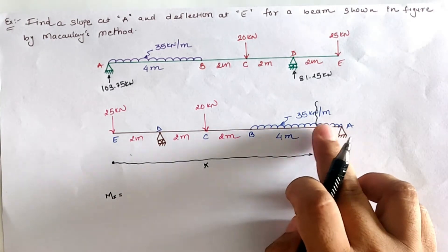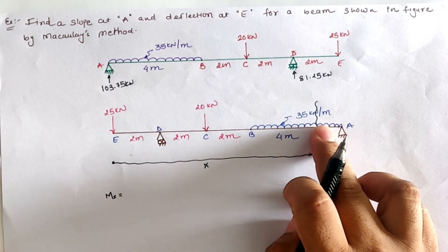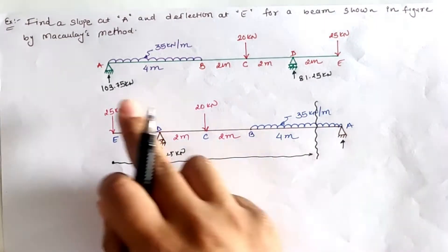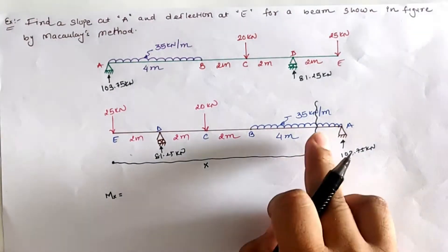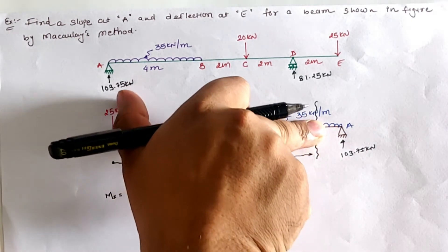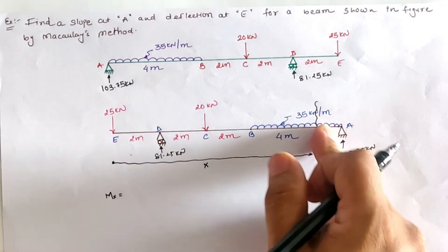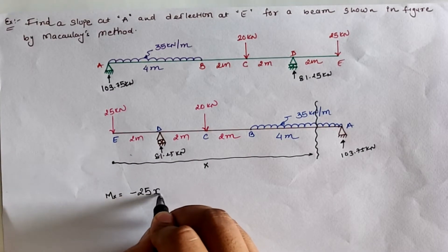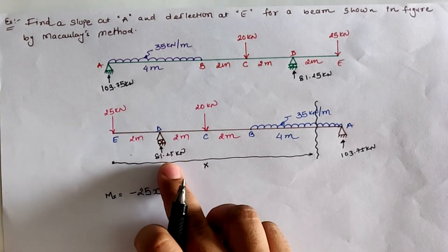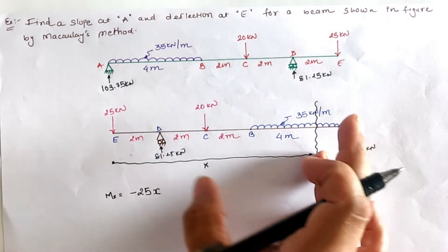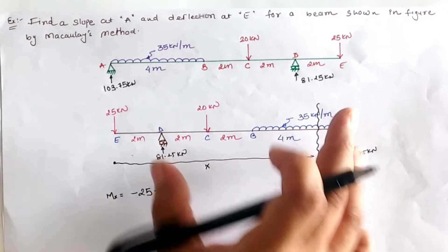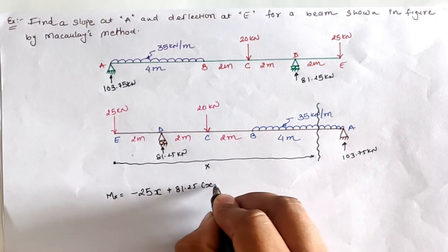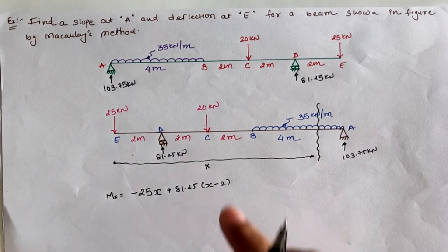If we calculate the moment at section Mx: due to the 25 kN load, it acts in the anticlockwise direction. Since the section is on the left-hand side, anticlockwise is negative, so it is −25x. Due to the 81.25 reaction, it creates a clockwise moment and the distance from the section is (x − 2), hence it is +81.25(x − 2).